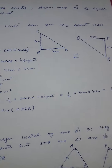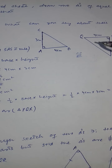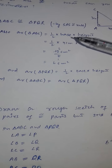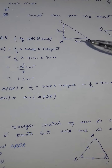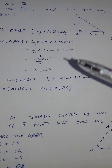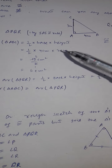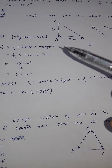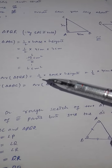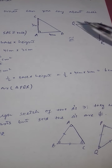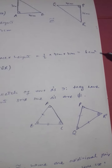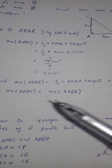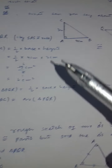Now let's find the area of both triangles. Area of triangle ABC: since it's right-angled, area = ½ × base × height = ½ × 4 × 3 = 6 cm². Similarly, area of triangle PQR has the same base 4 and height 3, so its area is also 6 cm². Therefore, area of triangle ABC equals area of triangle PQR. The triangles are congruent and have equal areas — this completes part one.